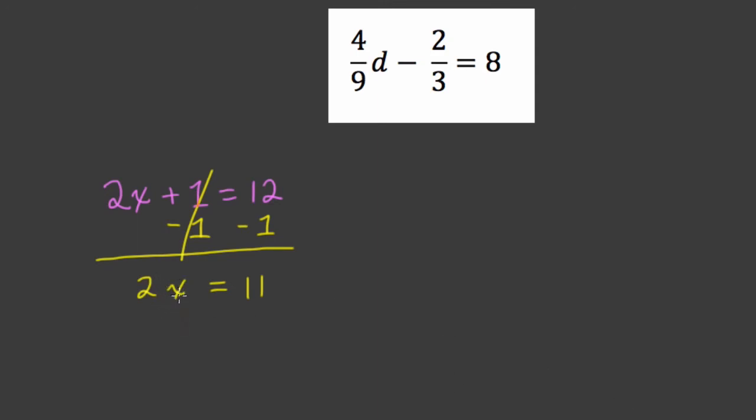Then, to find out what we have to multiply by, we can divide by 2 on both sides. And we get x equals 11 over 2. Or you can think that 2 goes into 11 five times with a remainder of 1, so it's 5 and a half.